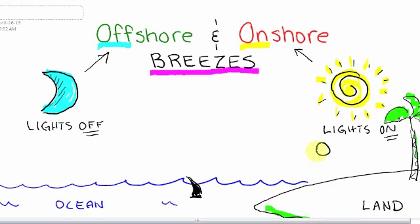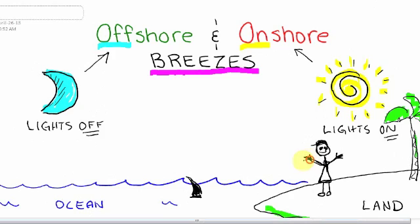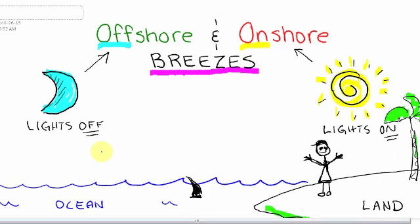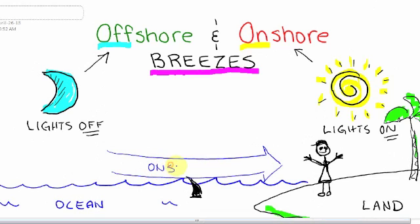You have to picture yourself standing here on the beach, wherever it is you are, just kind of looking out at the water. The question you have to ask is: which way is your hair blowing when you're looking out at the water? When you're looking at an onshore breeze, it's moving this way — an onshore breeze moves from the ocean to the land. In this case, you would have your hair blowing like this.